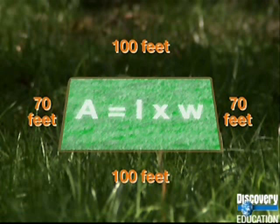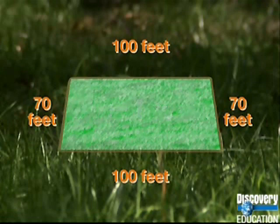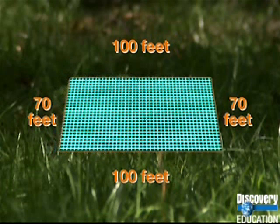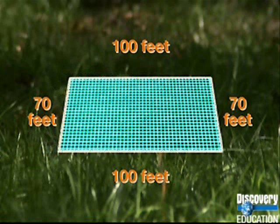For a rectangle, multiply the length times the width to get the area. The area enclosed by this fence is 100 times 70, which is equal to 7,000 square feet.